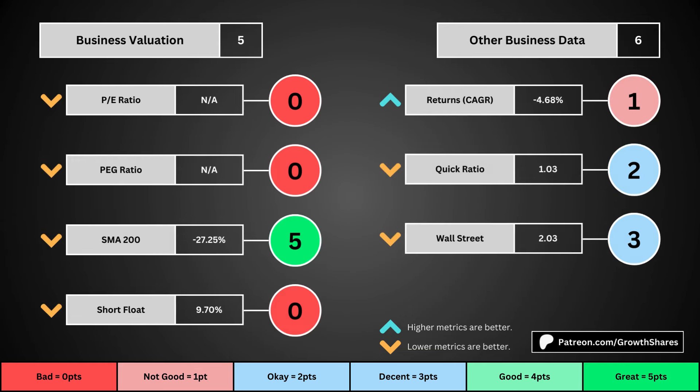This third set of metrics deals with the valuation of the company's stock based on its business. Think of the P/E ratio as a measure of speculation around the stock — we want it low. The PEG ratio adds earnings growth with the P/E ratio. Then, the 200-day simple moving average is the average stock price over that period; we want that low because it means we have a cheaper stock price. And short float is basically how bearish other investors think of the stock. For these four metrics, we want the values to be as low as possible, which will give us a higher point total within the bubbles.